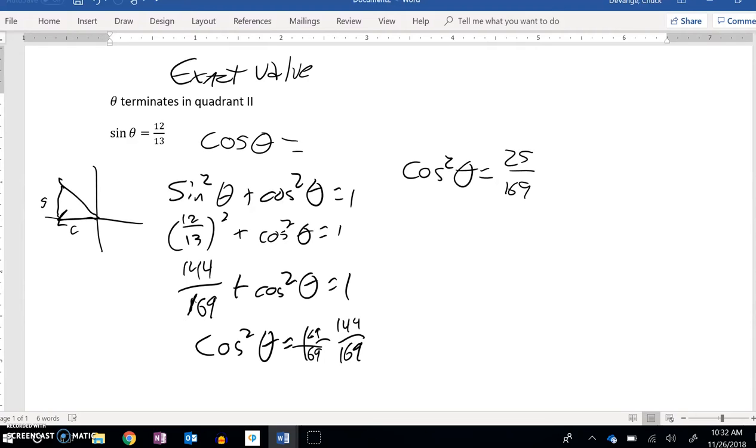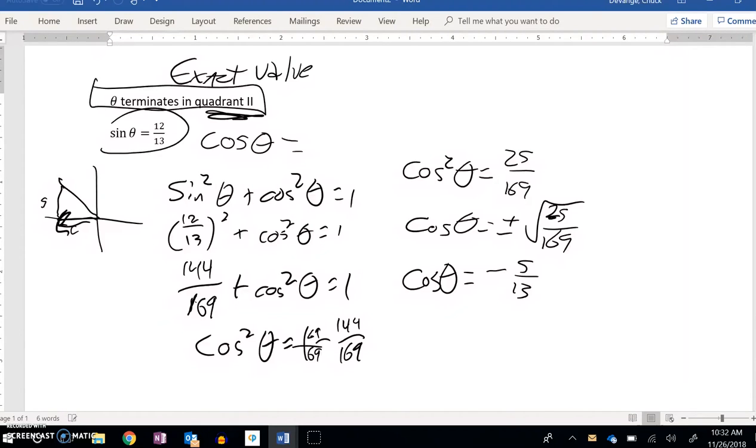And so cosine squared is that. So if I square root both sides, I get cosine theta is plus or minus the square root of this. 25 over 169. That's 5/13. And since I know it's in quadrant two, it's going to the left, it means it must be negative. So cosine of theta must be negative 5/13. So these problems, if you know one of them and you know where it terminates, you can find the other one using that Pythagorean relationship. That's a great problem.